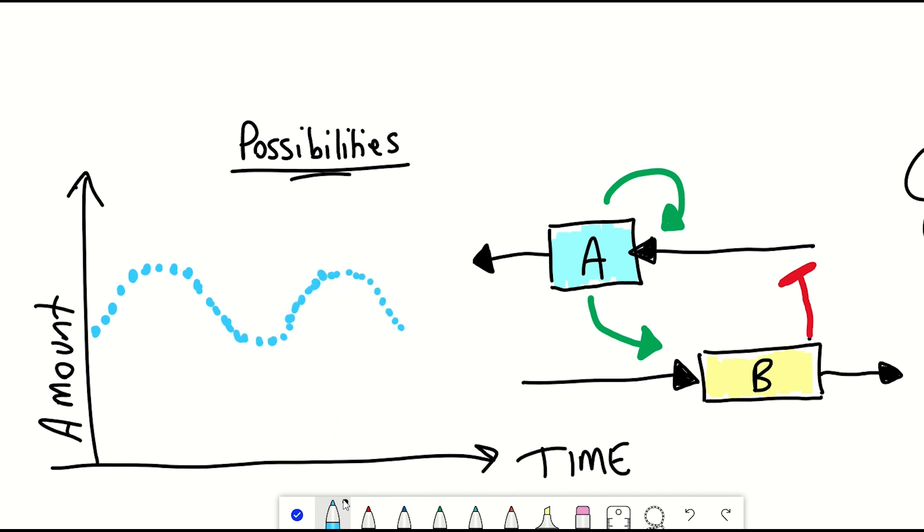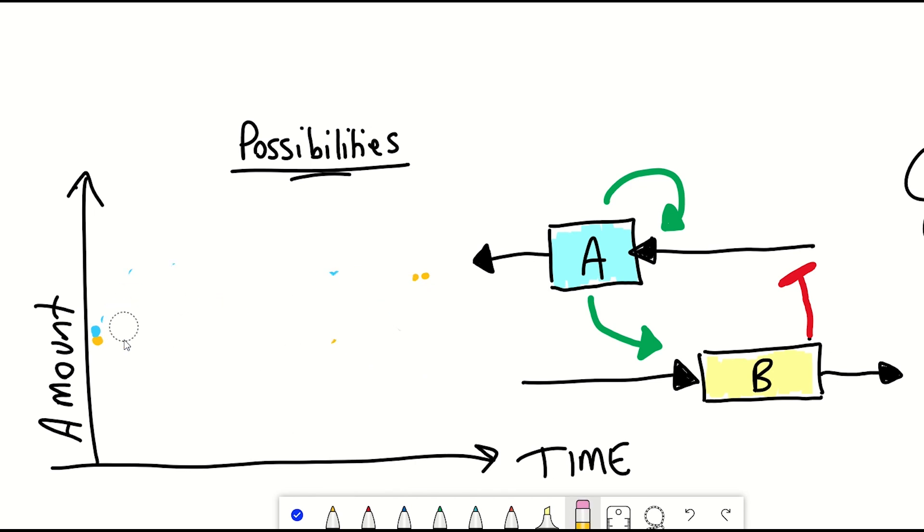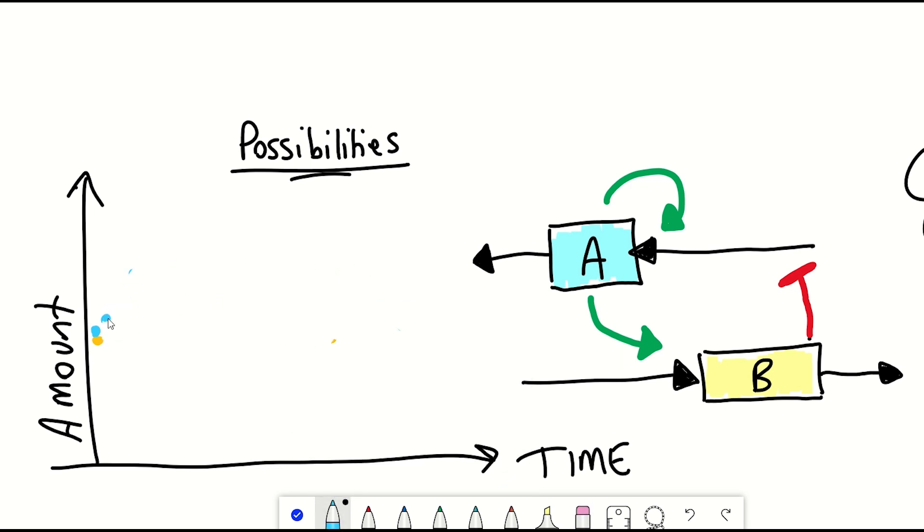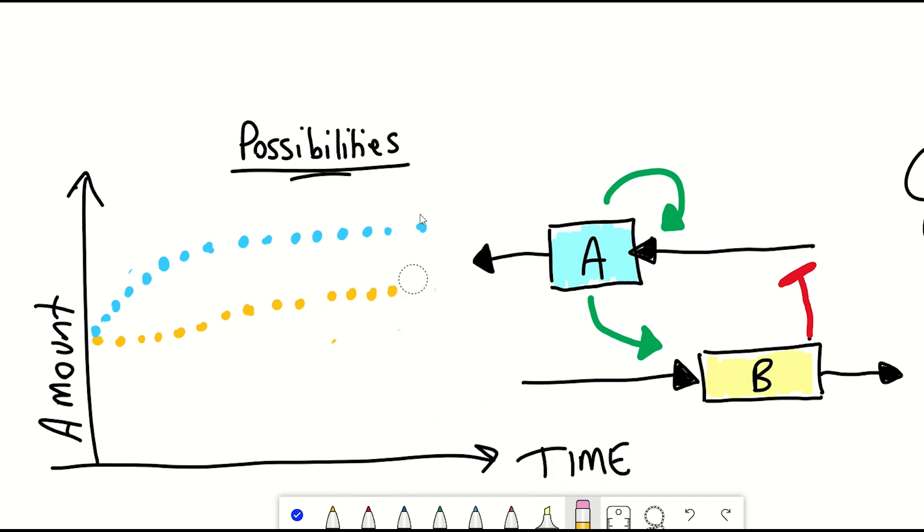But A is also activating B and so we might then see a decline. And then as A declines, there's less B activation and so A increases and maybe it sort of oscillates in a pattern. Maybe this oscillation dies down or maybe it goes on forever. Or maybe we just see A increase and reach a new steady state. Or maybe A goes to zero. Maybe B goes to zero.